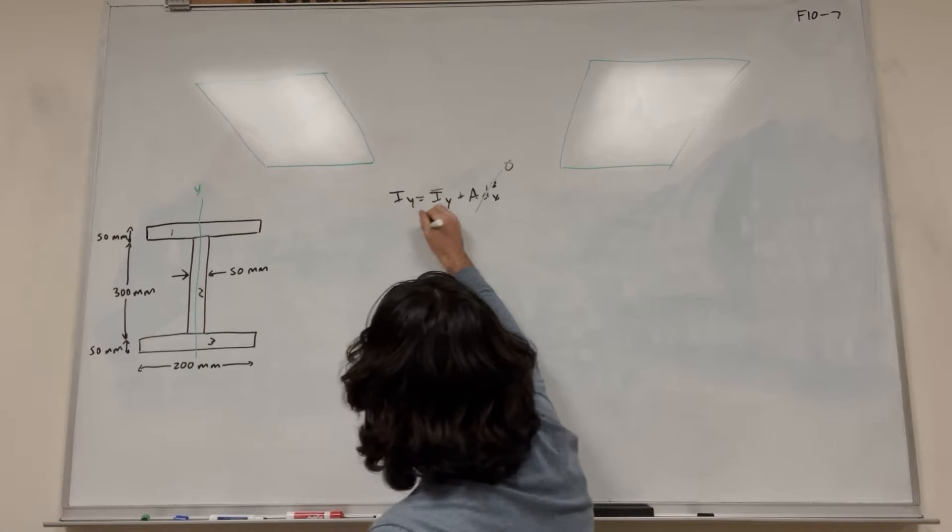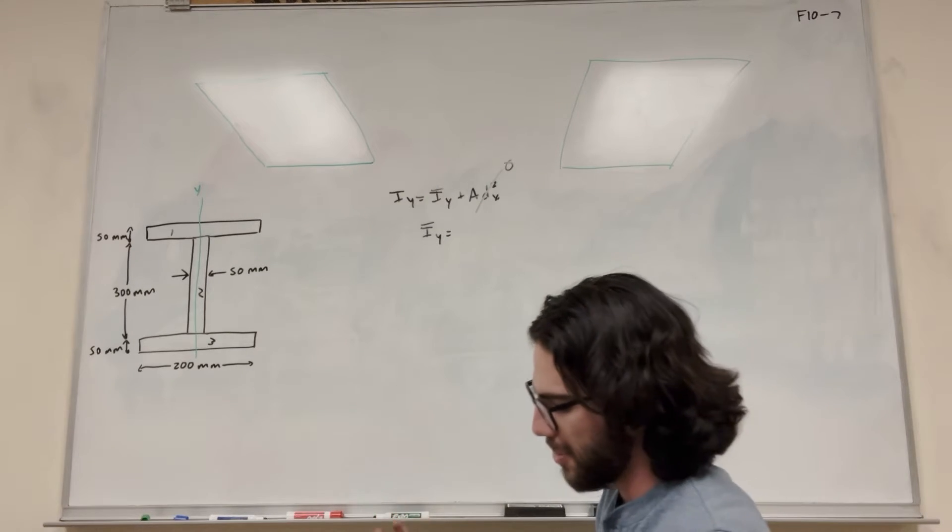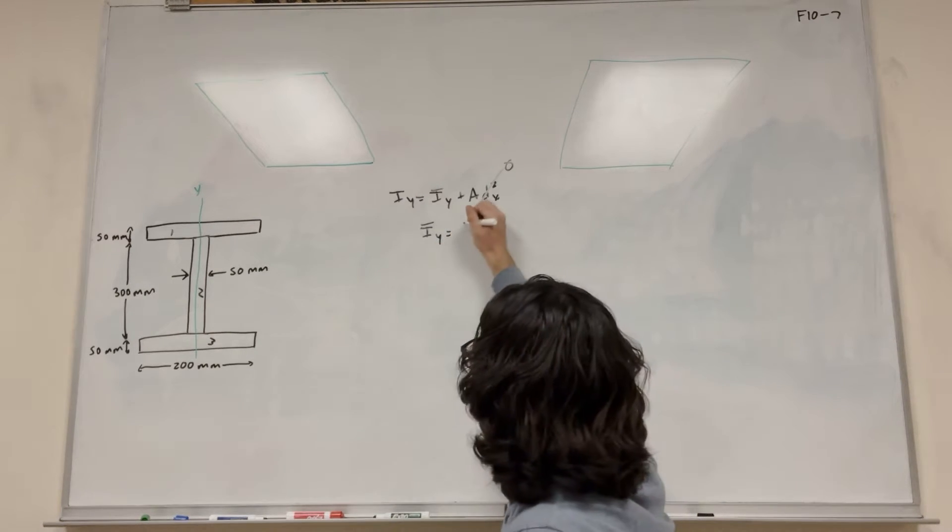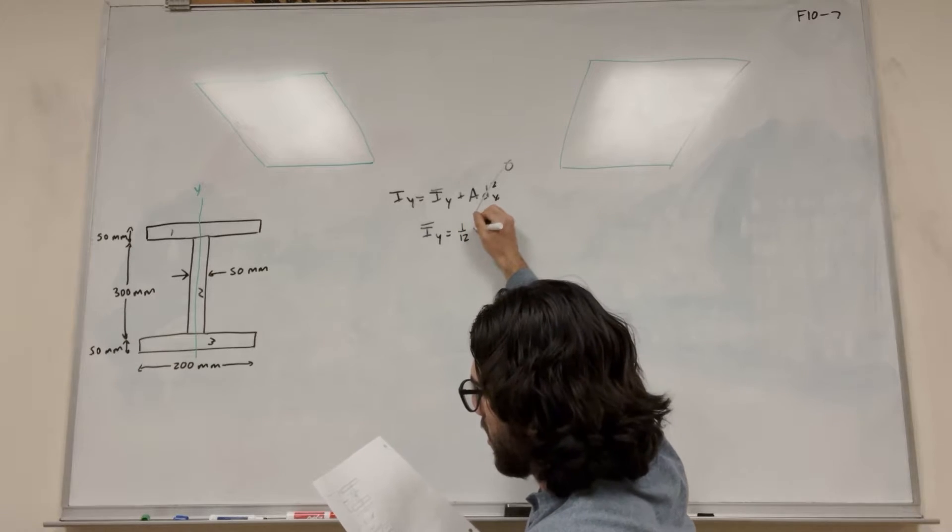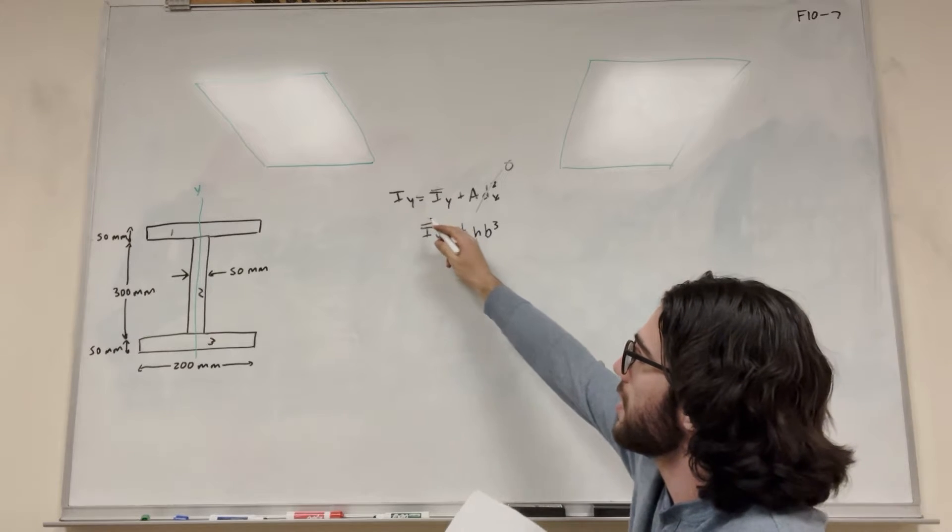So I-bar y for a rectangle - this is different for different shapes, you need to find that in the back of your book - but it's going to be 1/12 times height times base cubed. So this is basically the equation we're going to use to find each one of these.